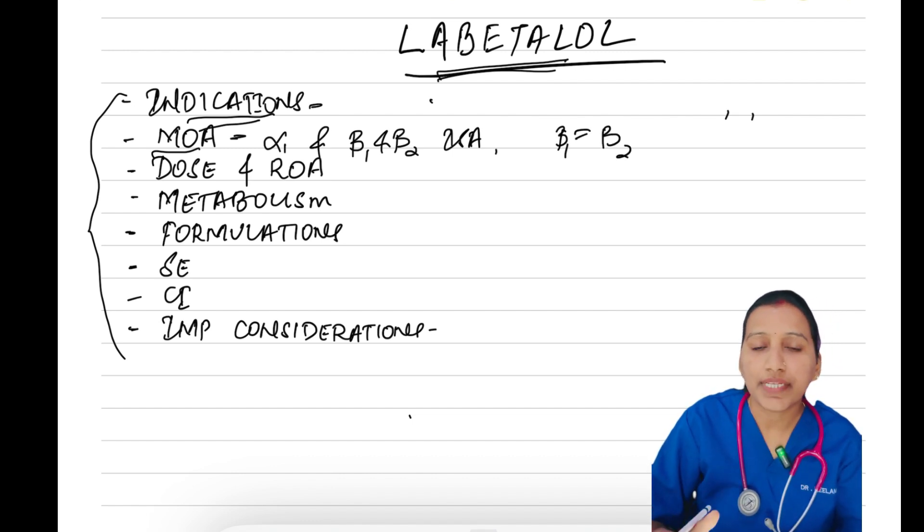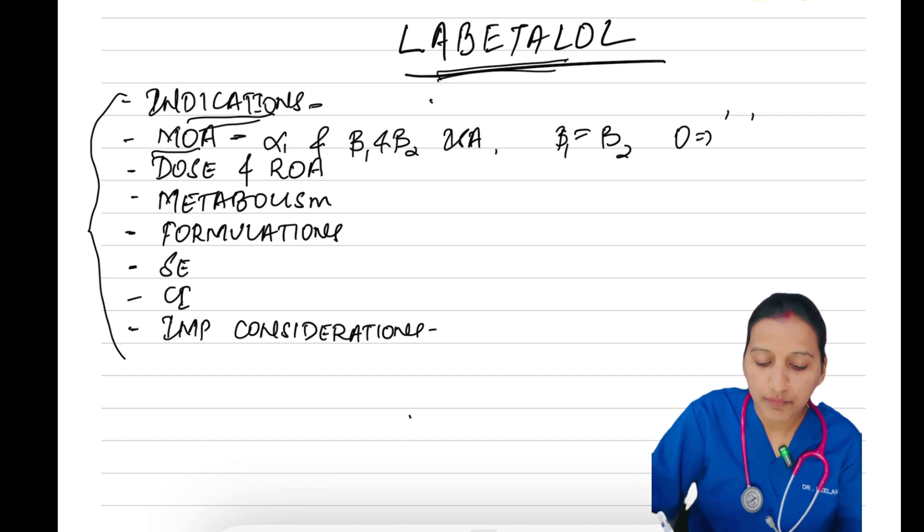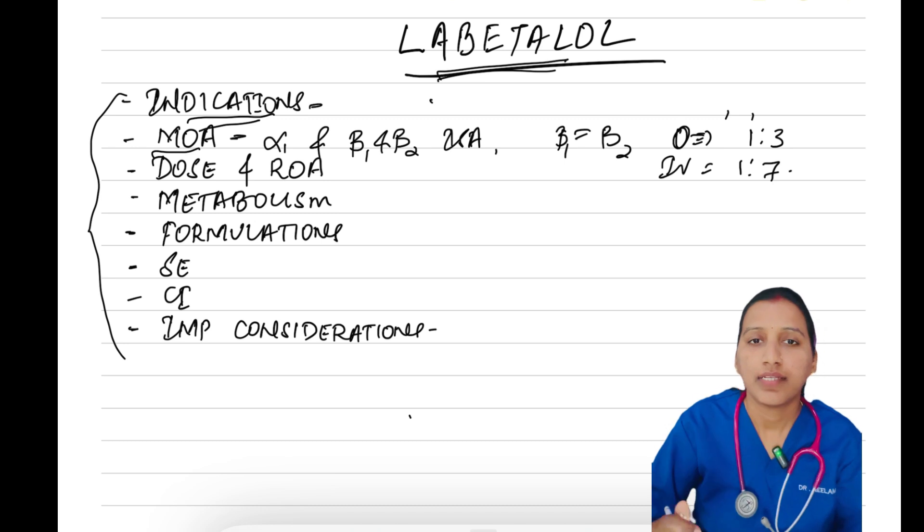Alpha and beta blocking depends upon route of administration. By oral administration, the ratio is 1:3, and through intravenous, the ratio is 1:7. Labetalol even has membrane stabilizing activity.